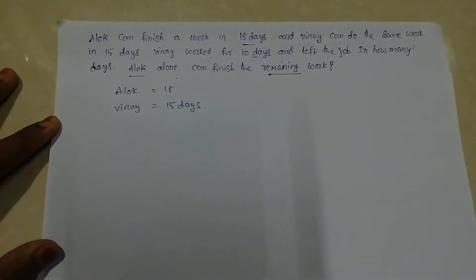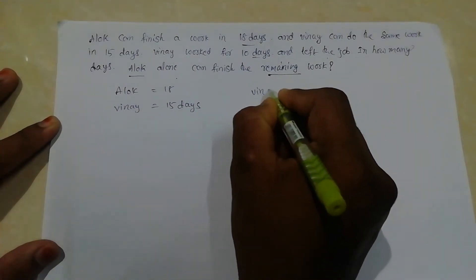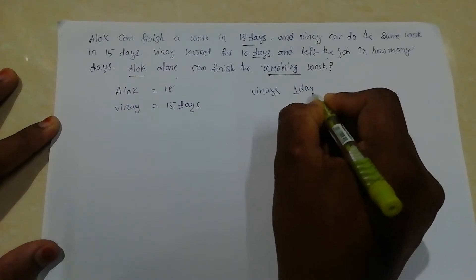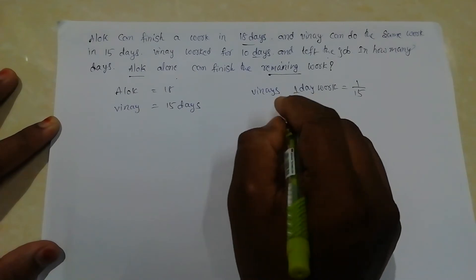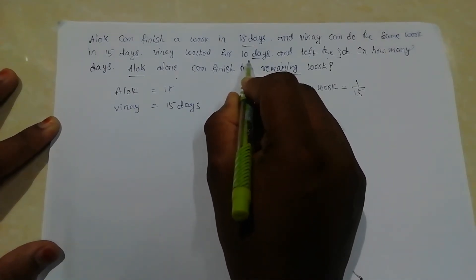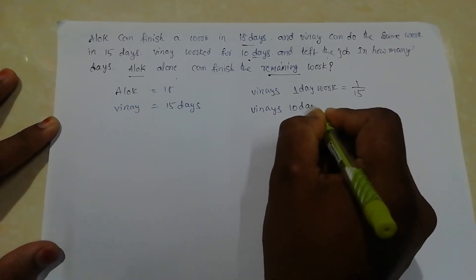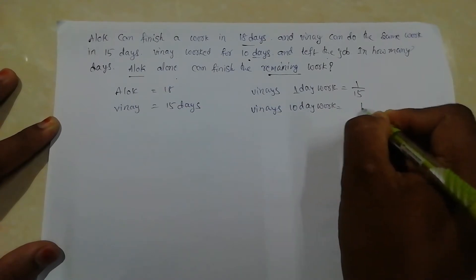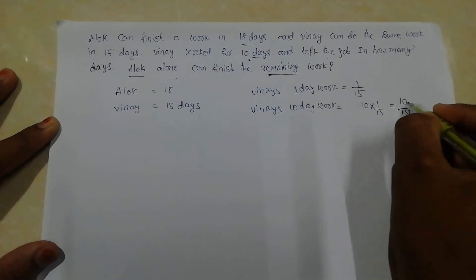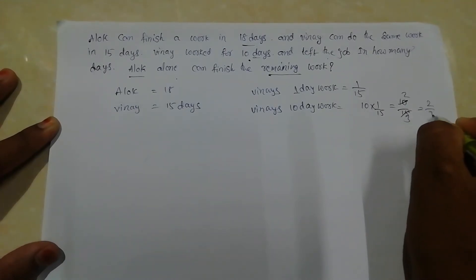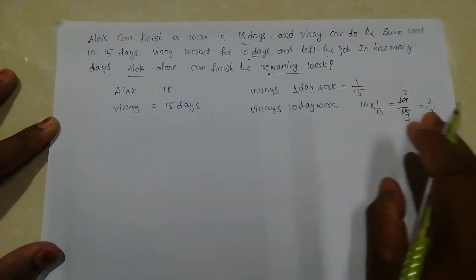Vinay's one day's work is 1/15. He worked for 10 days, so Vinay's 10 days' work is equal to 10 × (1/15) = 10/15, which simplifies to 2/3. That means in 10 days, Vinay can complete 2/3 of the work.